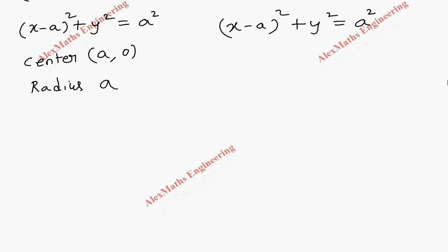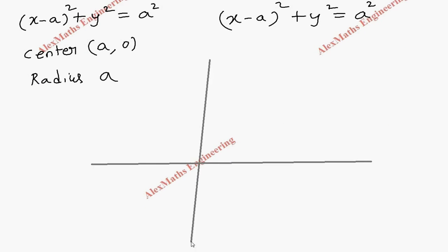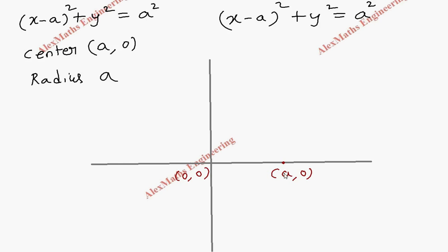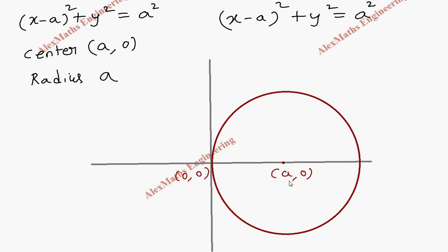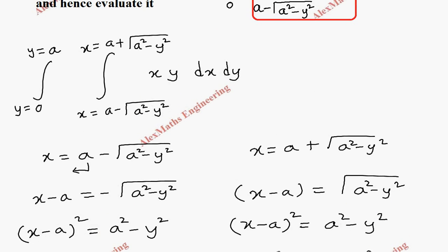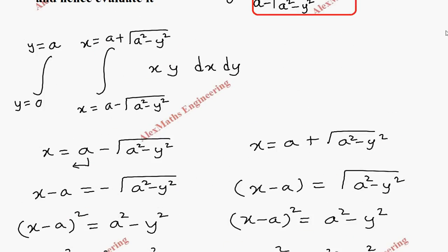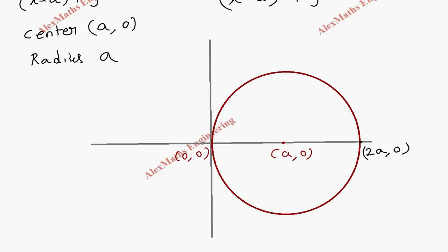So center is (a, 0) and radius is a units. Now we draw the diagram: take the x-axis and y-axis, and mark the center at (a, 0). The origin is (0, 0), and since the center is (a, 0) with radius a, the circle correctly touches the origin. The rightmost point is (2a, 0). Now the limit of x goes from a minus root of (a squared minus y squared) to a plus root of (a squared minus y squared), so we draw a horizontal strip from left to right.